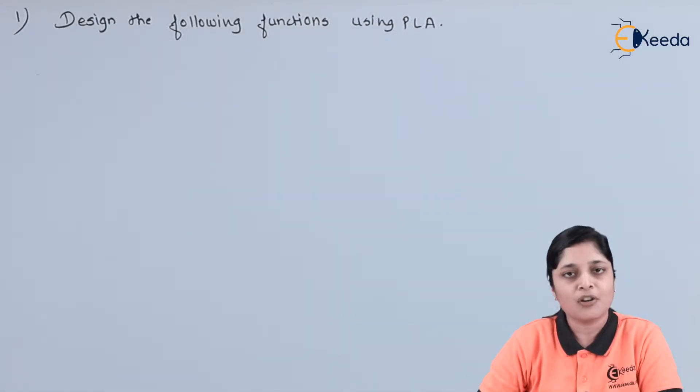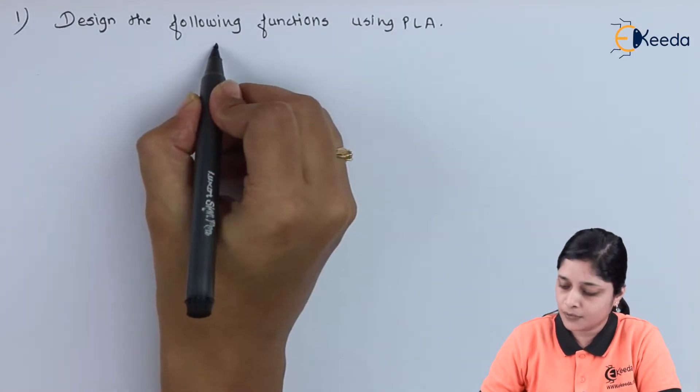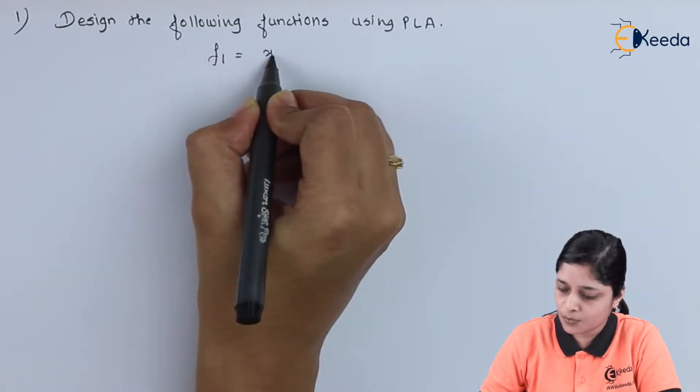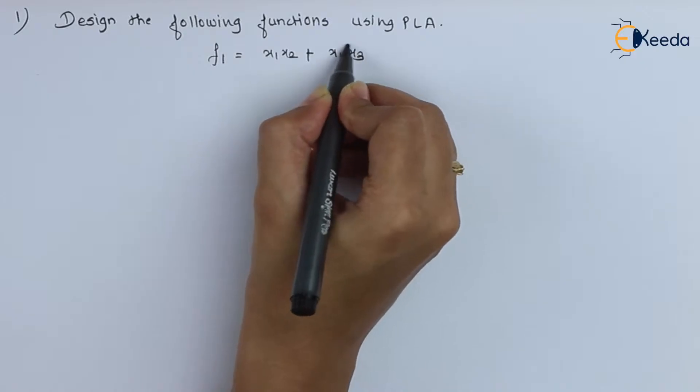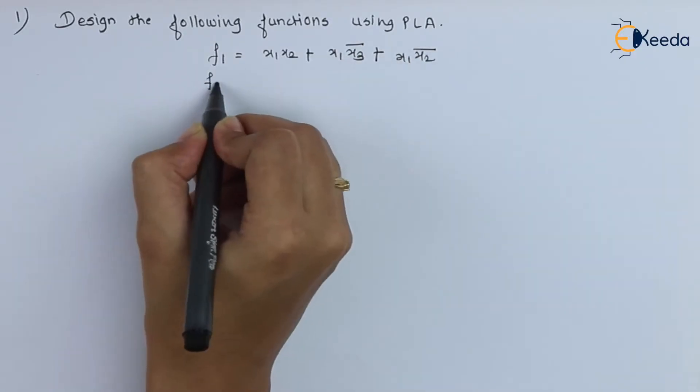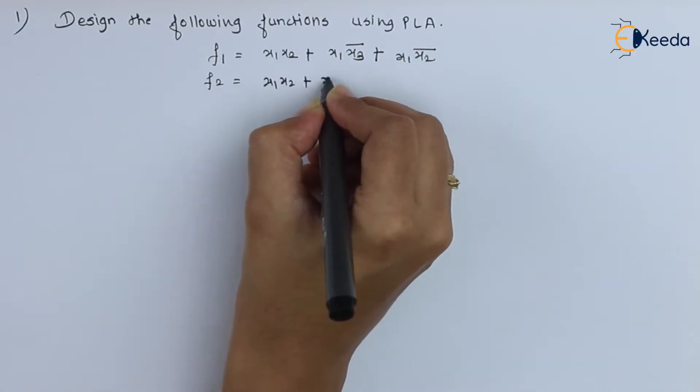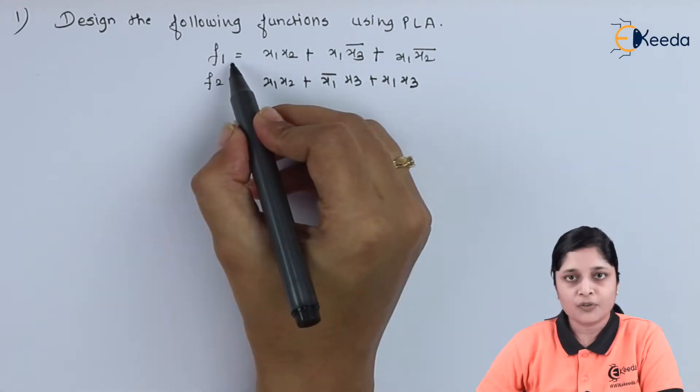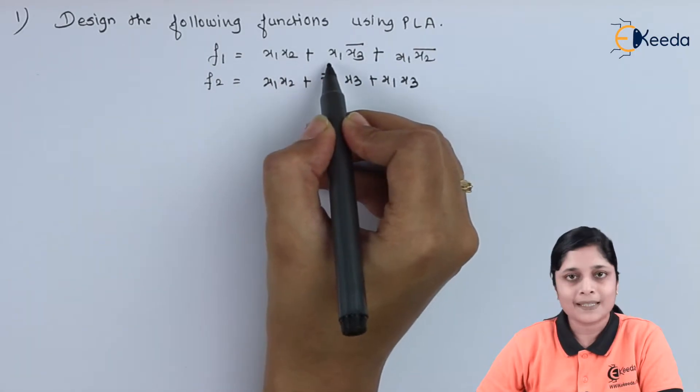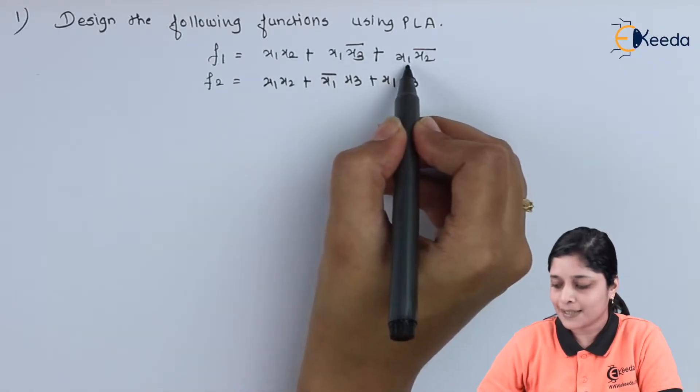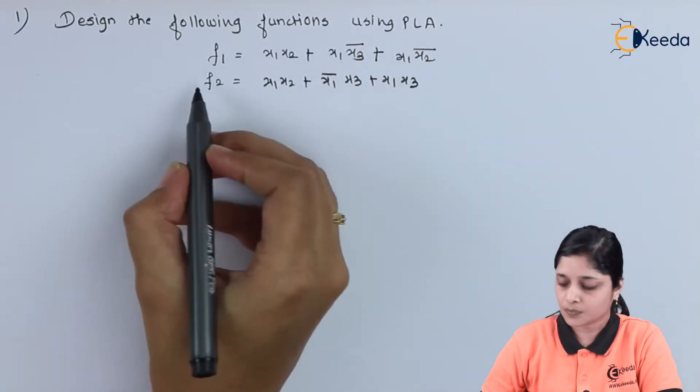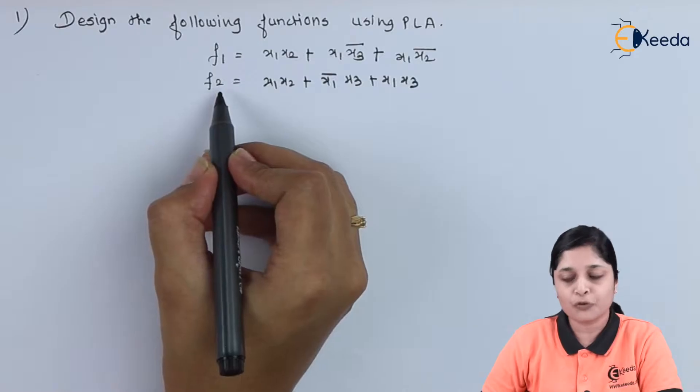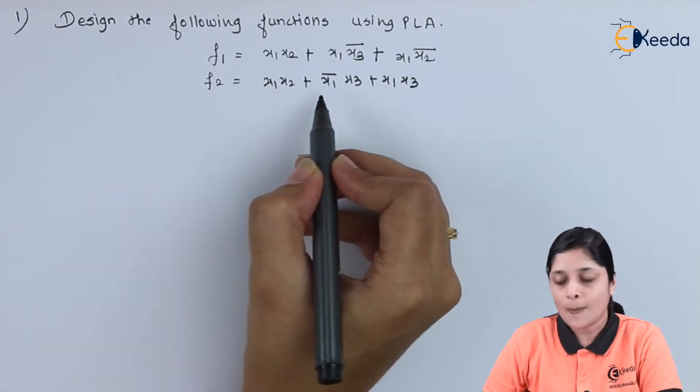Design the following functions using PLA. The functions are f1 equals to x1 x2 plus x1 x3 bar plus x1 x2 bar.